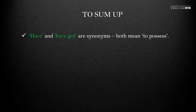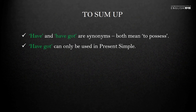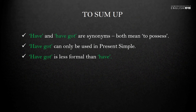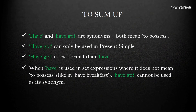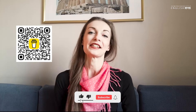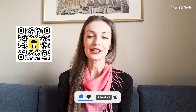To sum up, have and have got are synonyms — both mean to possess. Have got can only be used in the present simple tense and is less formal than have. We have a wide range of situations where we will use have and not have got. Importantly, have got is only the synonym of to have when we speak about possessions — objects, people, or illnesses. When have is used in expressions where it doesn't mean to possess, have got cannot be used as its synonym. We can say 'I have breakfast,' but not 'I have got breakfast.' I hope this video was useful — subscribe to my channel not to miss other lessons, and see you in the next video!